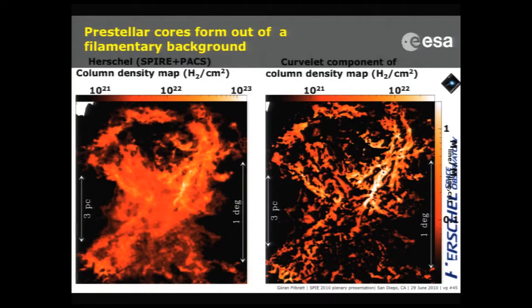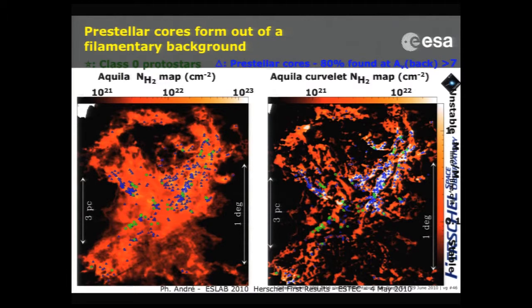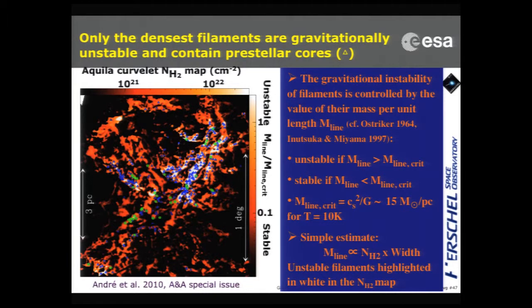The authors look at the column densities in these clouds and examine the column density in filamentary structure — what they call the curvelet component. When they plot the locations of the protostellar clumps, they fall exactly on the curvelet component of the column densities, i.e., the filamentary structures. The conclusion is that gravitational instability in filamentary structures is the place where you create the clumps that will eventually become stars, if the structure is unstable.